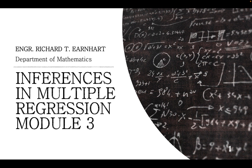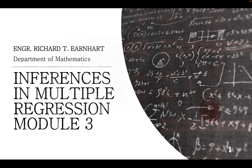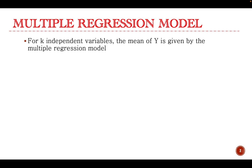We're going to discuss inferences in multiple regression. For k independent variables, the mean of y is given by this multiple regression model. Beta sub 0 is the constant term and it represents the intercept. The coefficients beta sub 1 up to beta sub k are the coefficients of the independent variables x sub 1, x sub 2, up to x sub k, and they represent the slopes of the regression model.